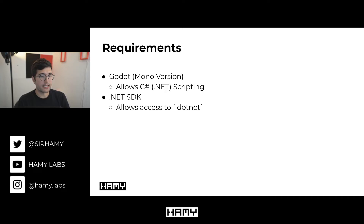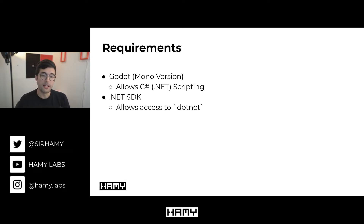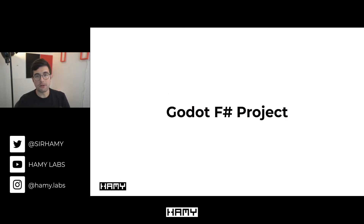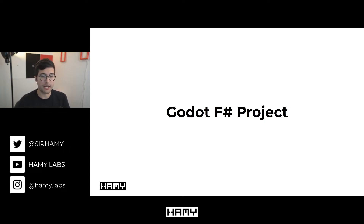The second thing we'll need is the .NET SDK. The reason we'll need this is because it's going to give us access to the command line utility .NET, which we'll be using throughout. So assuming you have these requirements all installed, we can go ahead and start creating our Godot project that can run F-sharp.